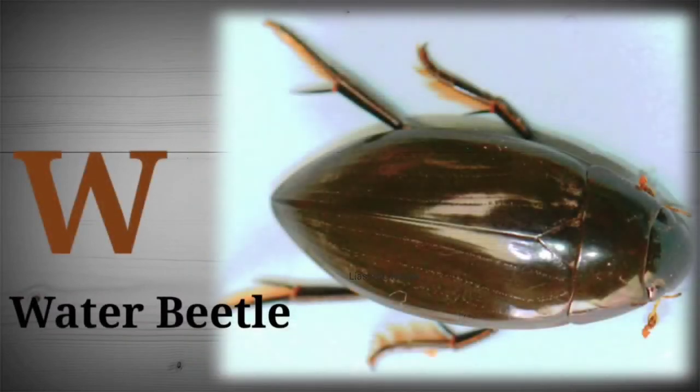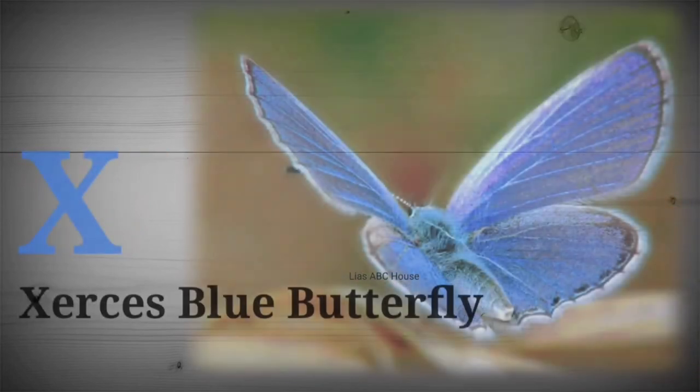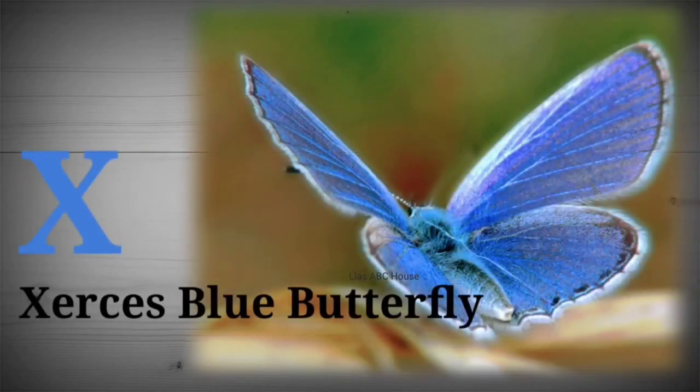W is for Waterbiddle. X is for Zazersis Blue Butterfly.